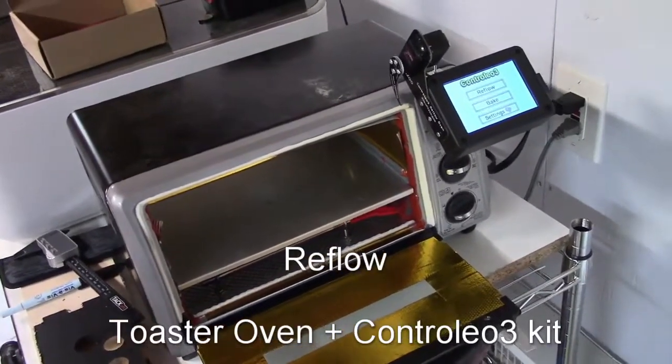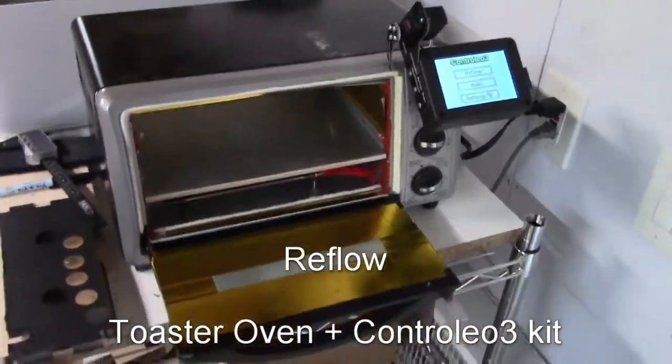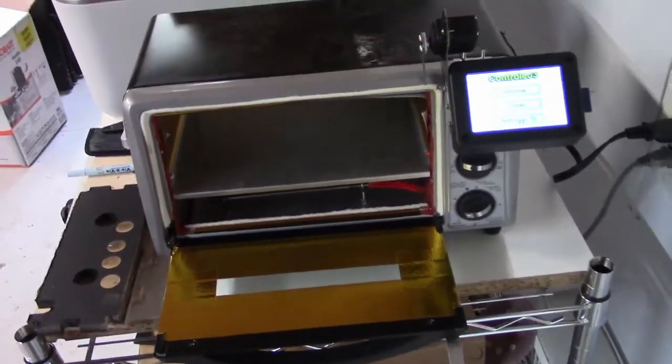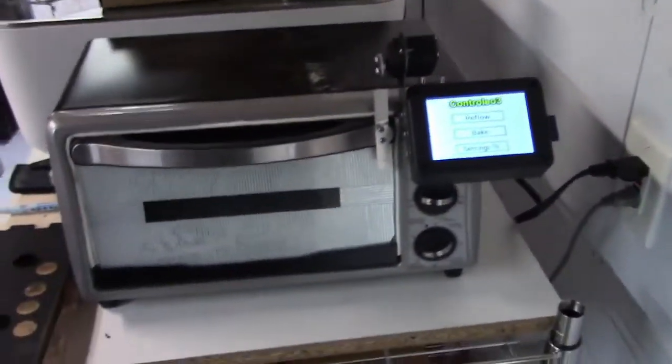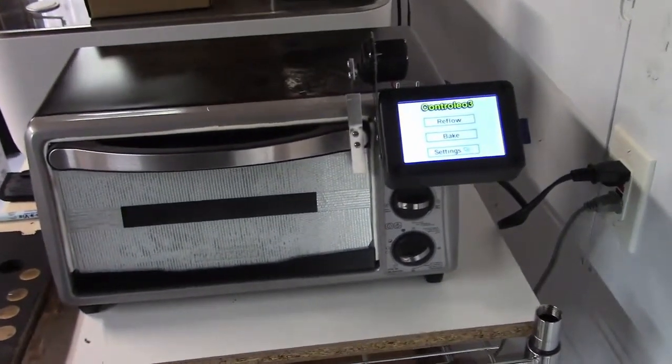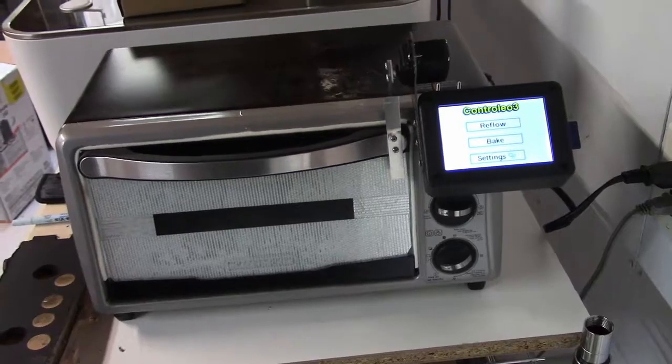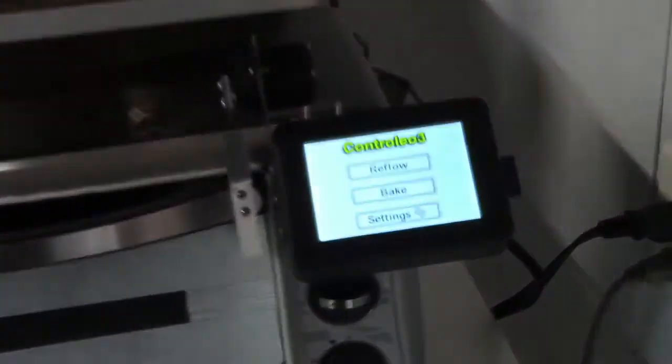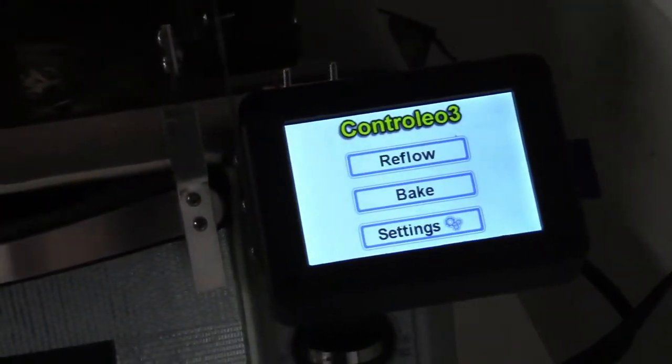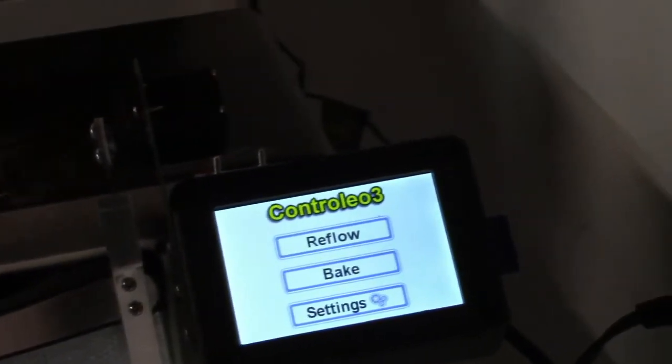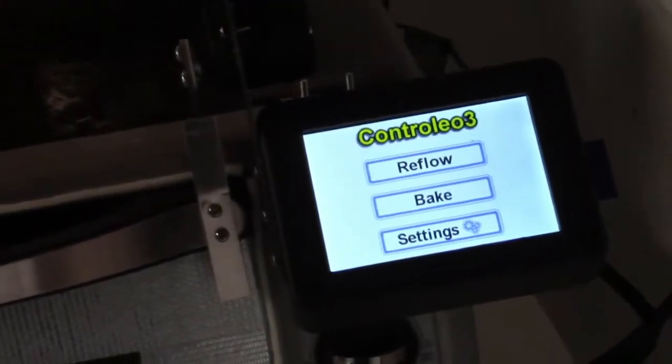So here we are in my shop. It's kind of a weird spot. It's actually underneath my garage. So this is my reflow oven. It's a heavily modified toaster oven. And over on the right you can see it's running Controlio 3. So it's a kit that has the controller and then all the relays and stuff.